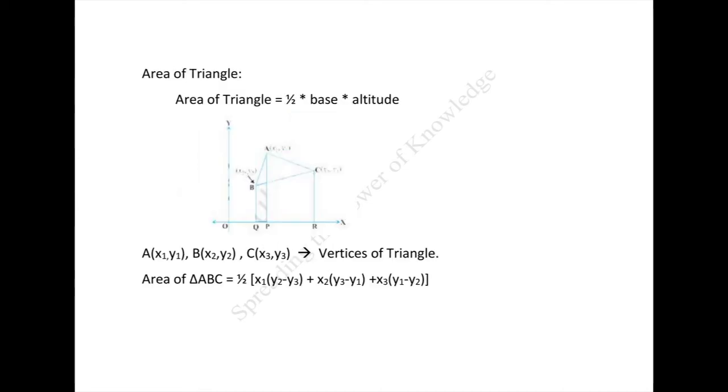Next, area of a triangle. We know area of triangle = ½ × base × altitude. Let ABC be any triangle whose vertices are A(x₁, y₁), B(x₂, y₂), and C(x₃, y₃). Then the area of triangle ABC = ½[x₁(y₂ - y₃) + x₂(y₃ - y₁) + x₃(y₁ - y₁)].